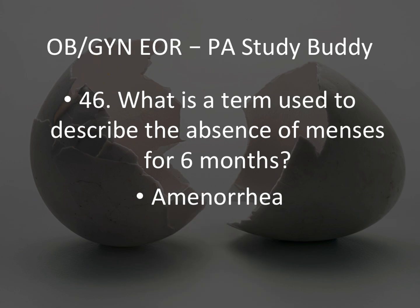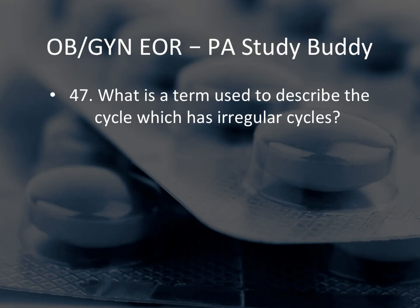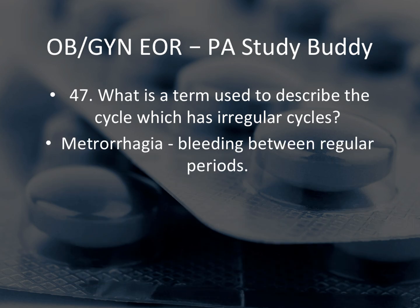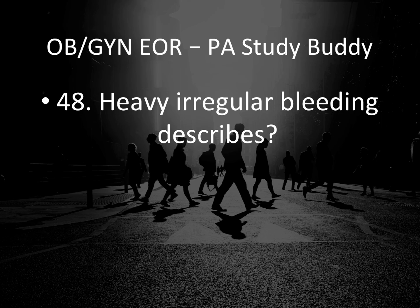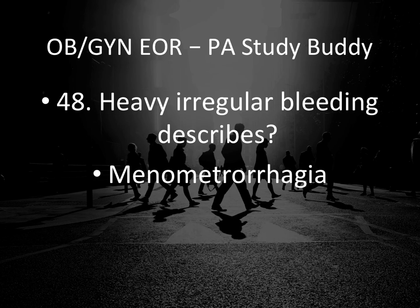Question 46: What is the term used to describe irregular cycles? Metrorrhagia — bleeding between regular periods. You can see how they can describe bleeding greater than 35 days, less than 21 days, or bleeding between cycles. Metrorrhagia is bleeding between regular periods. Question 47: Heavy irregular bleeding describes what? Menometrorrhagia. Heavy bleeding alone is metrorrhagia, but heavy and irregular is menometrorrhagia.